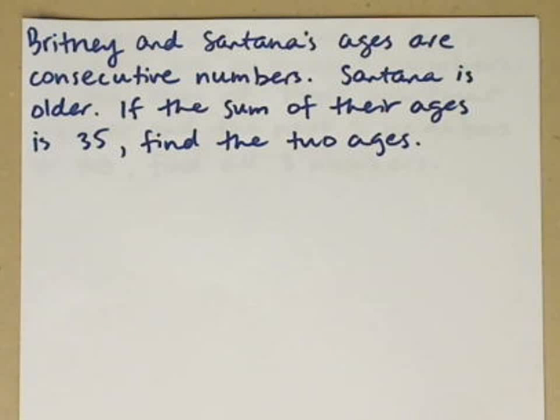In this video, we're going to look at solving story problems using the concept of consecutive numbers. Here's our first example. Brittany and Santana's ages are consecutive numbers. Santana is older. If the sum of their ages is 35, find the two ages.